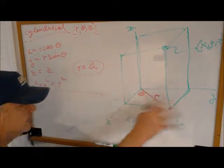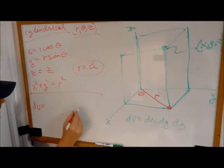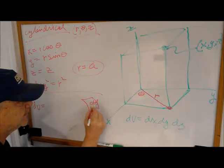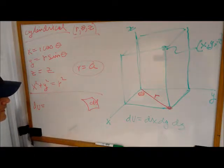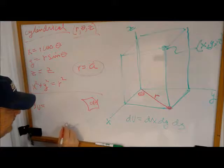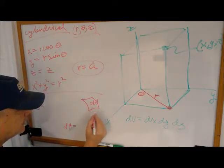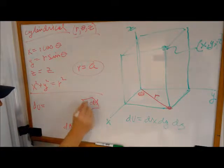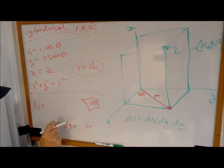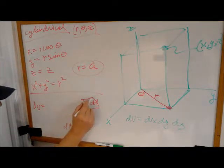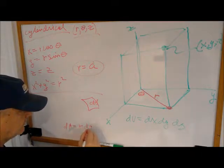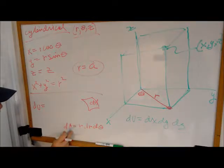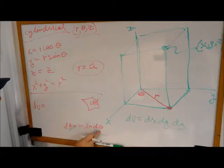If you recall, in the XY plane in the polar system, you have something that looked like this for area. We called it dA. dA was equal to, well, r changes a little bit, so it's dr. And then we have this length here that's associated with dθ, but it's an arc length, so it's r dθ. So dA in polar coordinates is r dr dθ.